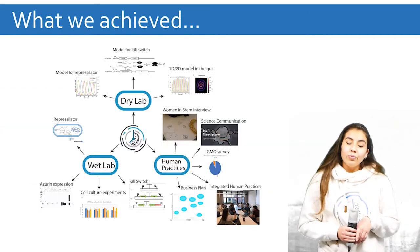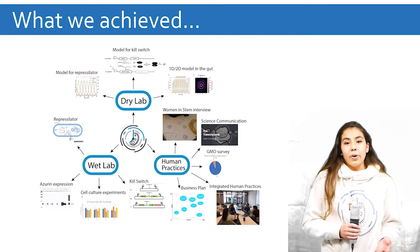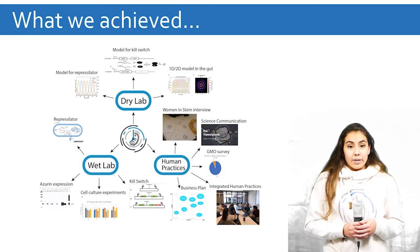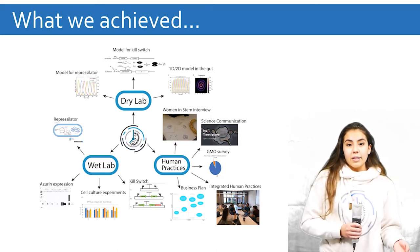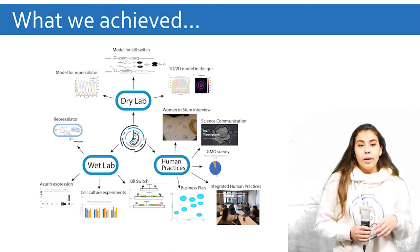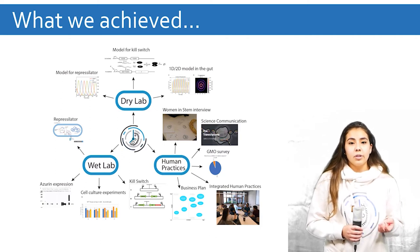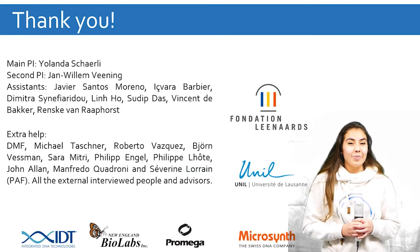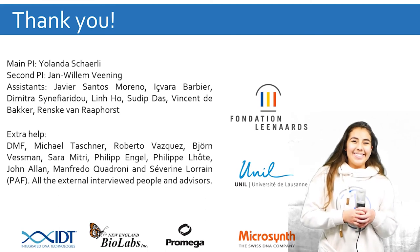Finally, what did we achieve with our project? Firstly, we demonstrated that the repressilator works in E. coli Nissle 1917. We achieved azurin production and secretion. We designed a biosafety mechanism and obtained proof of concept for the temperature control. And finally, the model suggested that the bacterial populations oscillations need to be synchronized regularly. We would like to thank all of the people that helped us, especially our PI, Yolanda, and all of our assistants. Thank you so much.